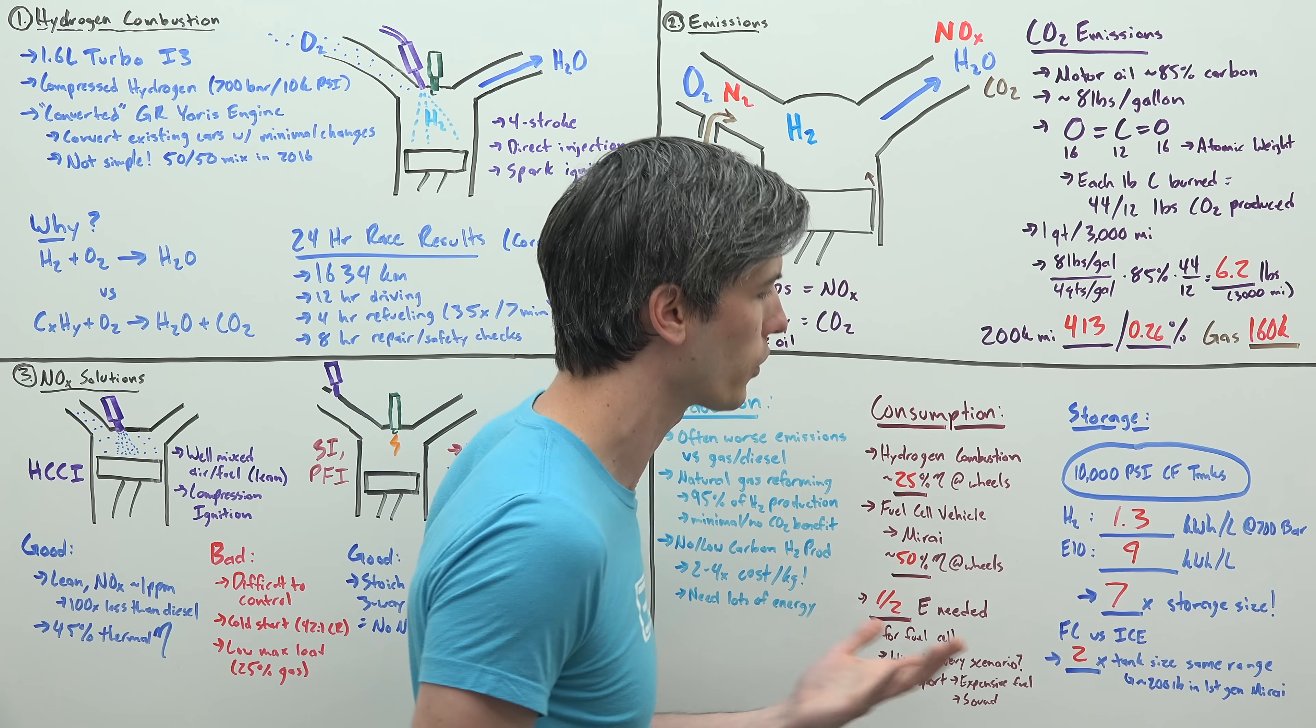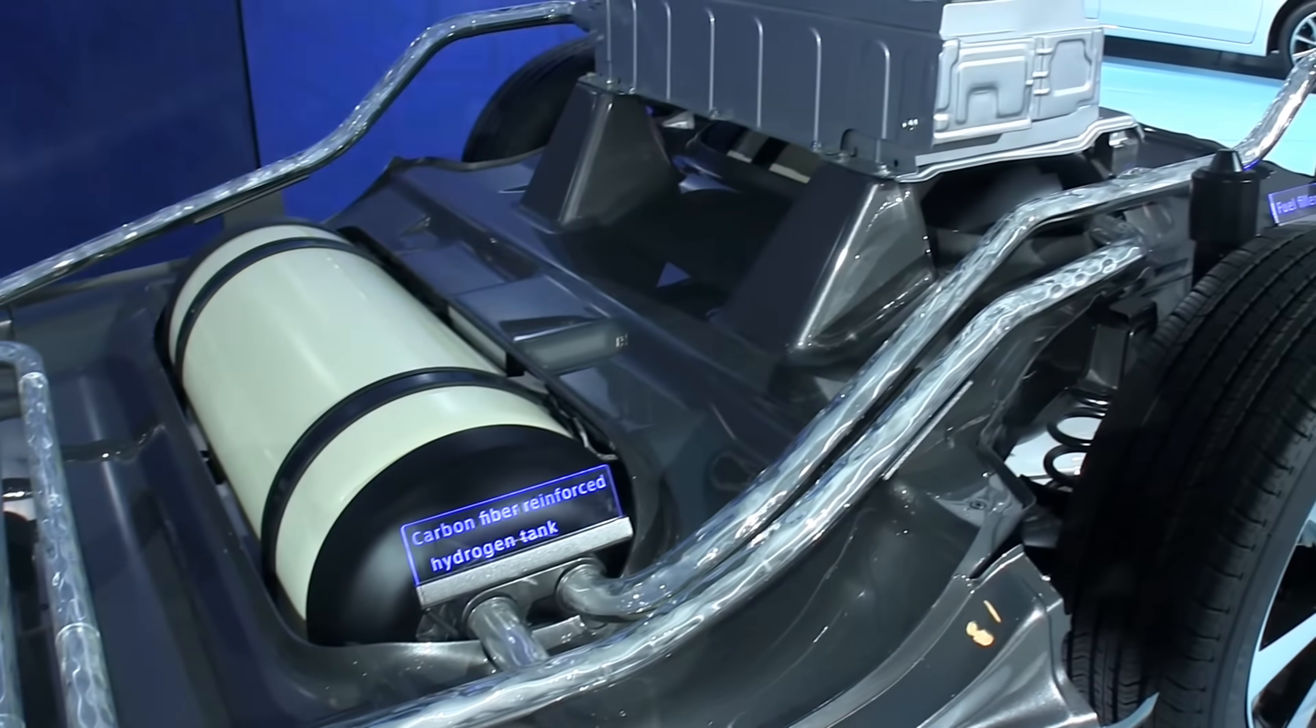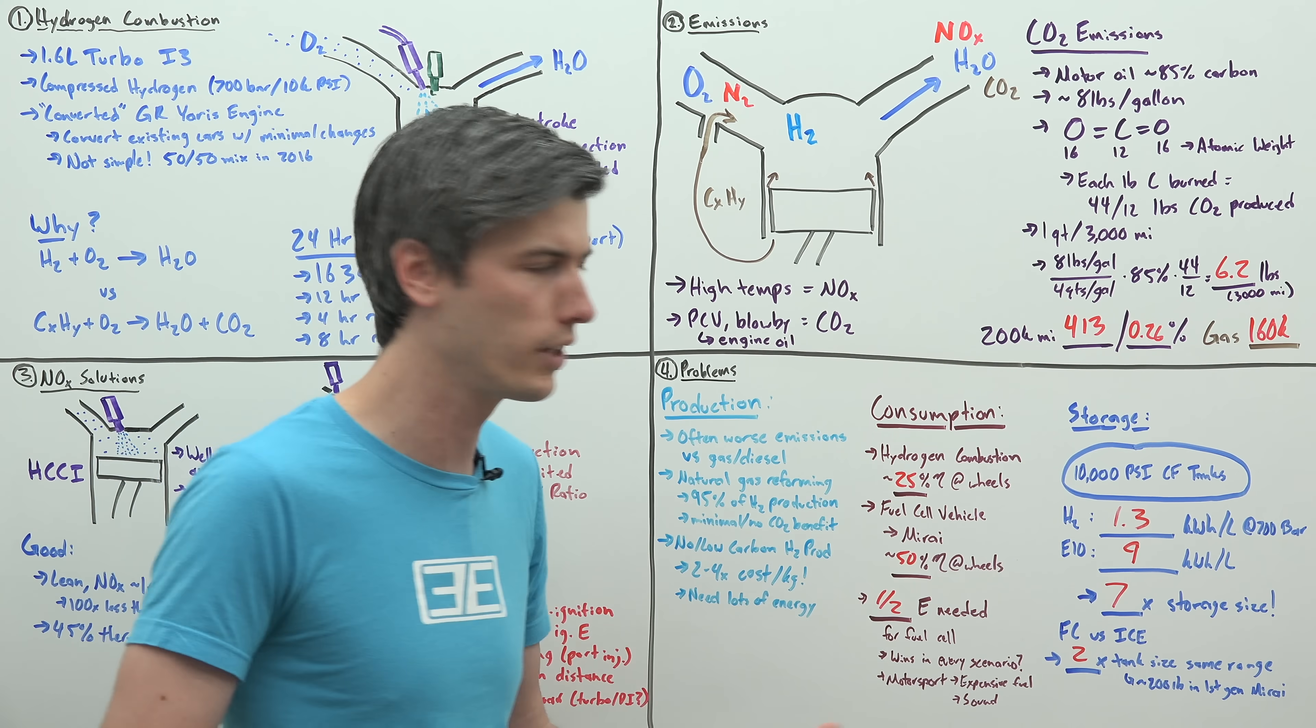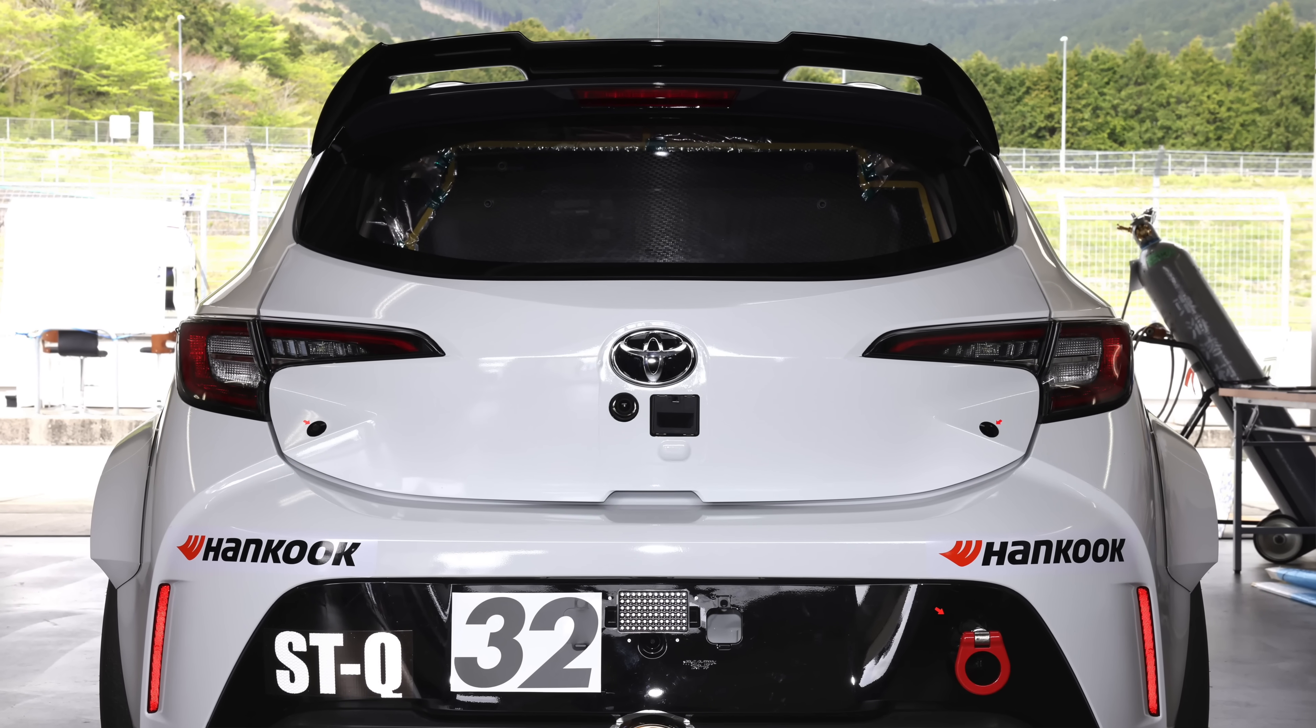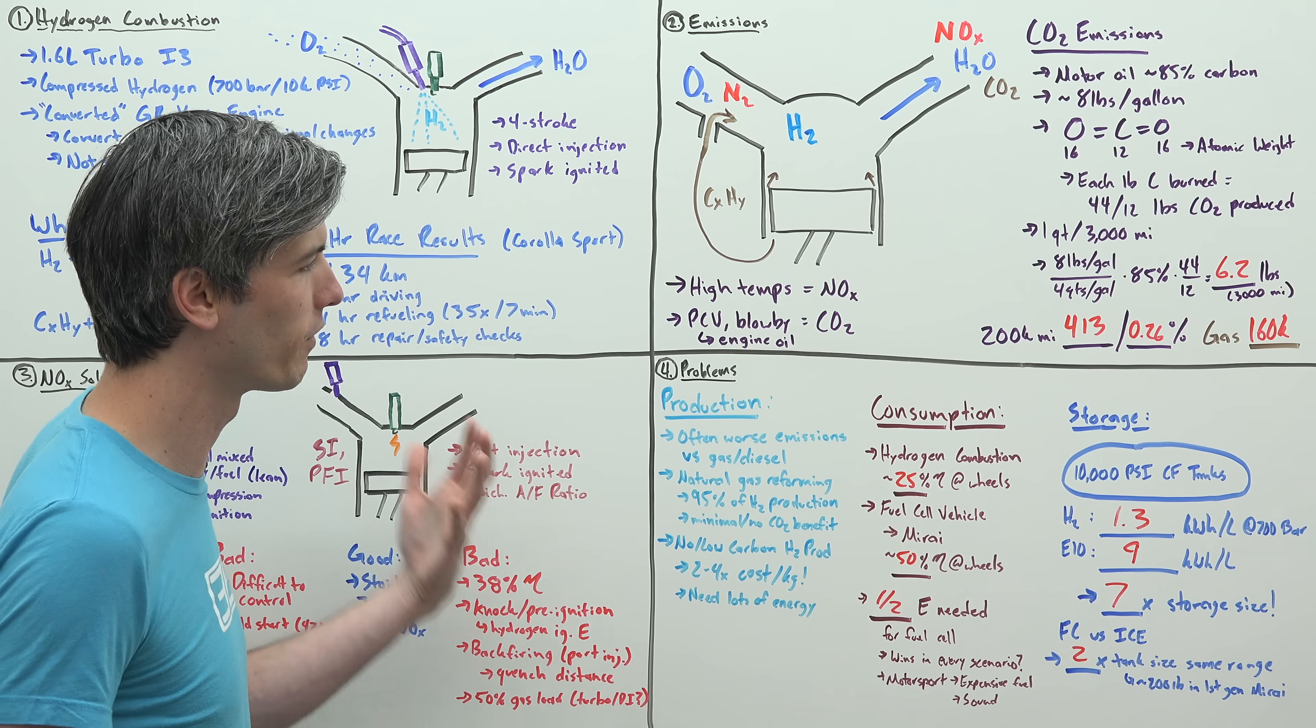From a fuel cell standpoint versus a combustion engine standpoint, you're going to need two times the tank size in order to compensate for that lack of efficiency. If you go back to the first gen Toyota Mirai, which had a range of about 300 miles, it had about 200 pounds of fuel tanks. So these are really heavy and massive. They take up a lot of space in the car. That was the case with this race car as well. They had no rear visibility because the back of the car was all taken up by these massive hydrogen tanks.